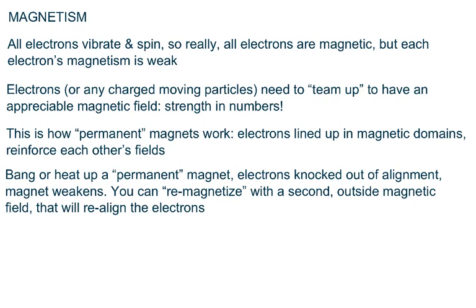Permanent magnets aren't truly permanent — if you bang a magnet around or heat it up, the electrons can get knocked out of alignment. When they lose alignment, they no longer reinforce each other and the magnet gets weaker. You can re-magnetize it though with an outside magnetic field, like an electromagnet, which will realign those electrons and your magnet is back in business.